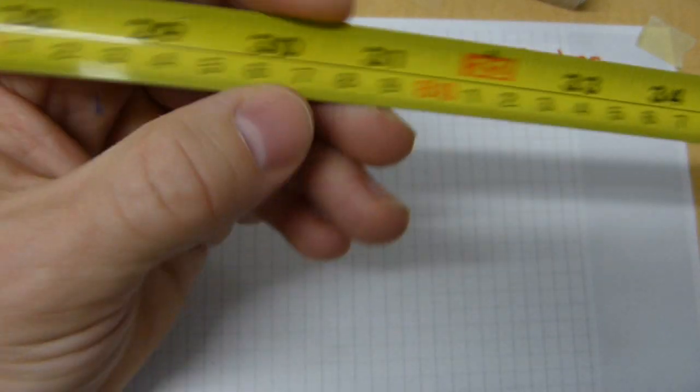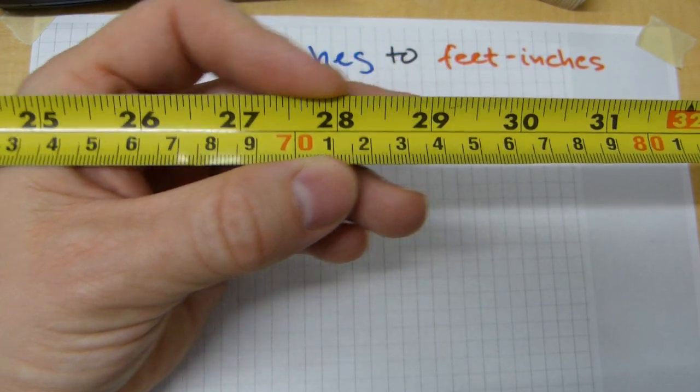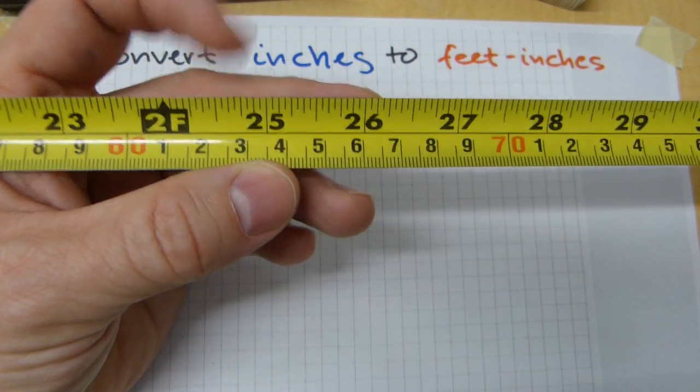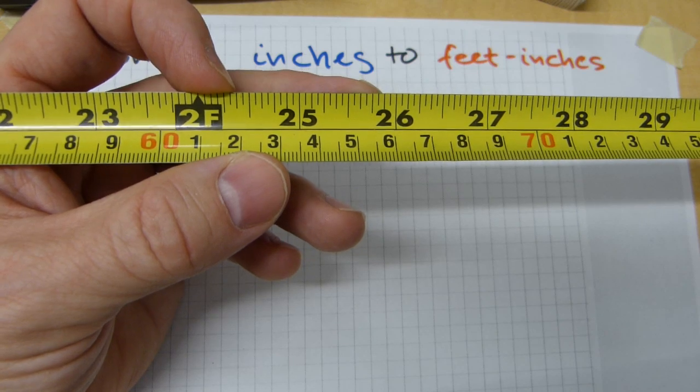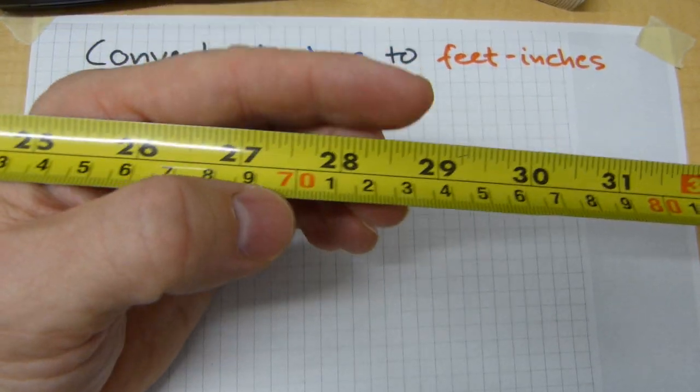Let's pick another measurement. 30 inches. How many feet is this? Look to the left here. Find the nearest foot mark, 2 feet and then count the inches. 1, 2, 3, 4, 5, 6.